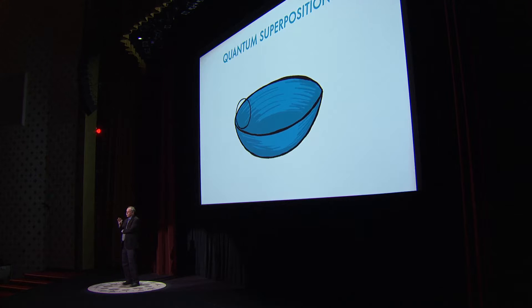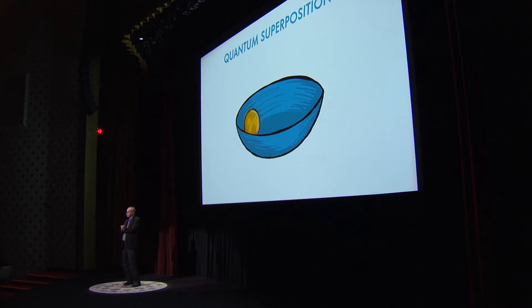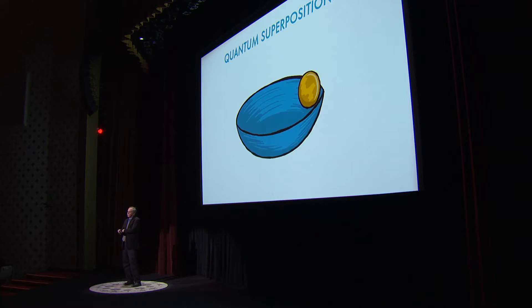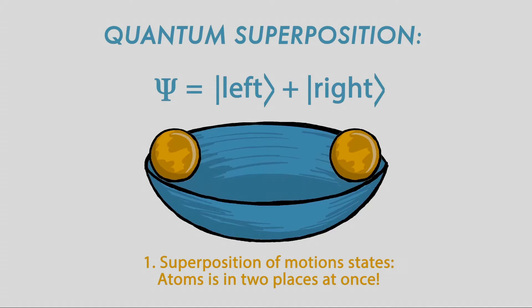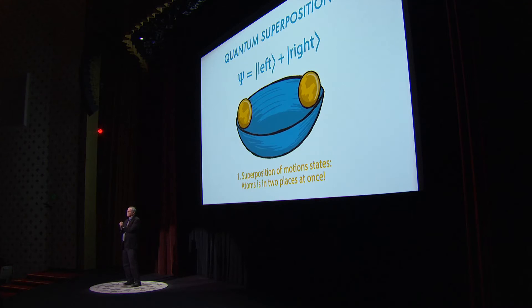Another example we can do in the lab: in our atoms, we store them in a trap, but a good analogy is like having a marble in a bowl. The marble can roll back and forth, so at one instant of time it will be on the left side of the bowl, and then later on the right side. But can we somehow make a situation where it's both on the left side and the right side of the bowl at the same time? And the answer is yes — at certain instances of time the marble can be both on the left side and the right side of the bowl simultaneously.